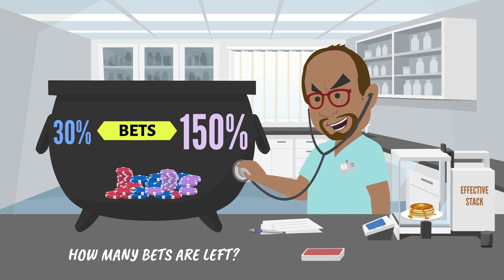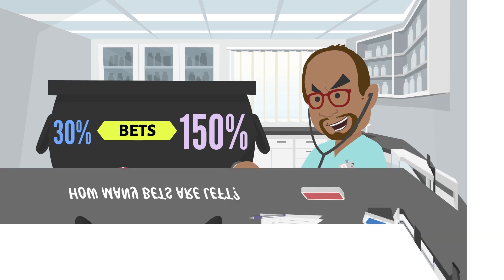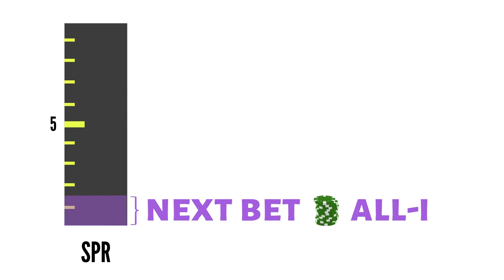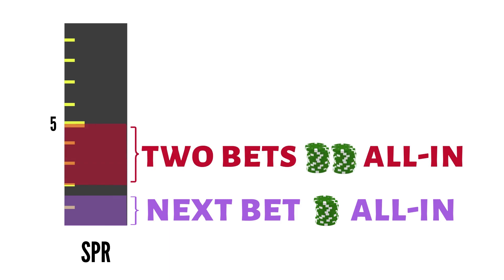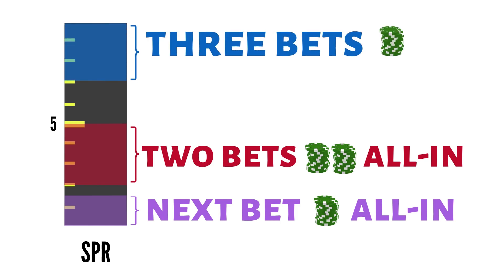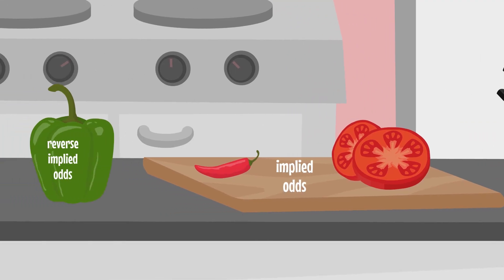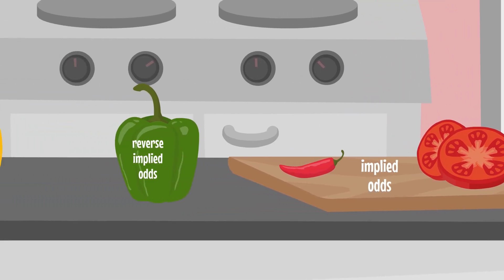We can get a rough sense of how many more bets are left based on the SPR. Let's take a look at some practical examples. An SPR below 1.5 means the next bet will probably be all-in. An SPR of two to five means that two more bets are likely before one player is all-in. With an SPR greater than seven, it's almost certain that at least three bets will be needed to get stacks in.